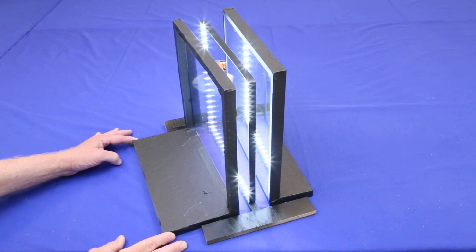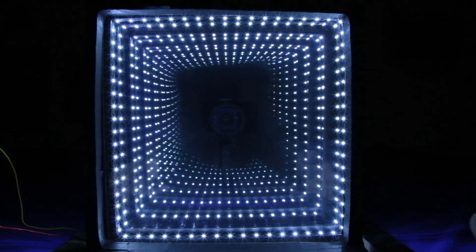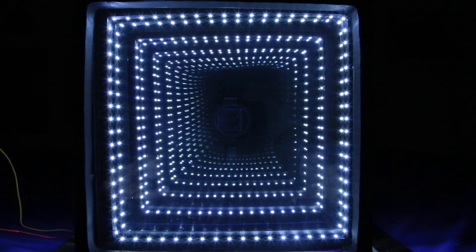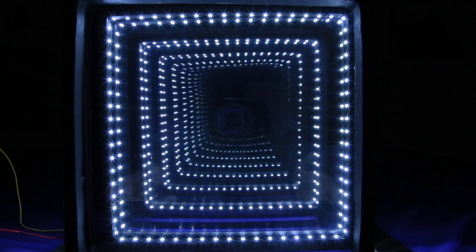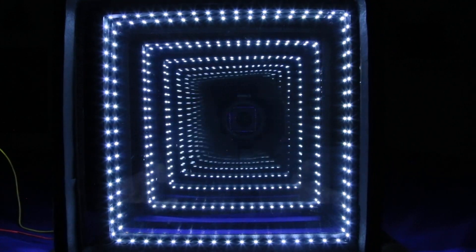First up, we'll slide the front mirror forward. This creates pairs of images of the light ring with wider and wider spaces between them. This also shows how important it is to keep the mirrors parallel, otherwise the reflections will bend one way or the other.